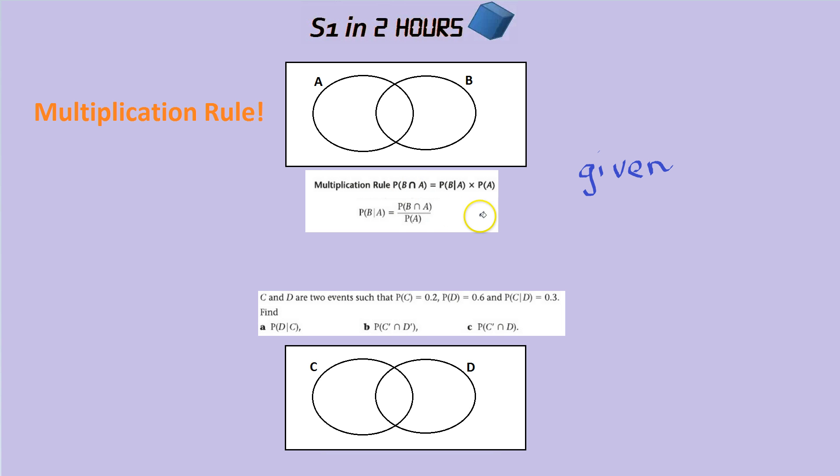One mistake I see a lot of students make is getting this bottom line wrong. It's the second letter, it's the one after the line that goes on the bottom. Everyone remembers to do A and B and B and A on the top, but some people get the bottom line wrong. So it's the probability of the second letter that goes down here.